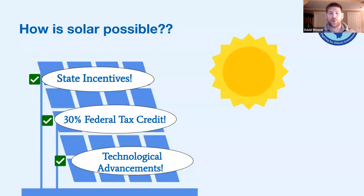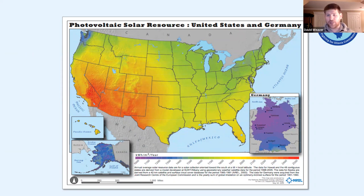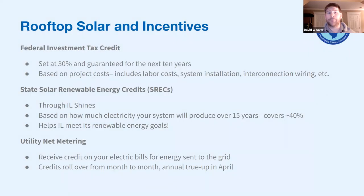Shifting to renewable energy — I hear the pervasive myth that Illinois isn't a good state for solar because it's cloudy. Germany is a perfect counter-example: Germany produces the most solar energy per capita anywhere in the world, yet it's mostly a purple and blue country on the solar irradiance map, meaning it gets among the least sun. Pretty much the entire continental United States, except maybe parts of Washington state, gets more sun than Germany. So we are absolutely a great place for solar generation.